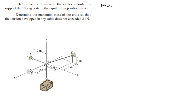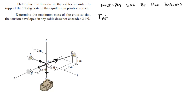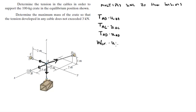Step 2 is to multiply the unit vectors by the tensions. There are four tensions: the tension created by the weight of the crate, the tension in cable B, tension in cable C, and tension in cable D. Each tension is multiplied by its corresponding unit vector: tension AB times unit vector AB, tension AC times unit vector AC, tension AD times unit vector AD, and the weight of the crate multiplied by the unit vector for the crate.